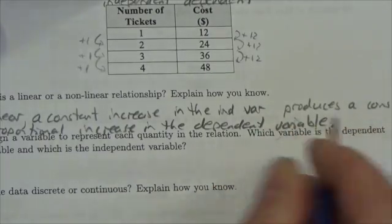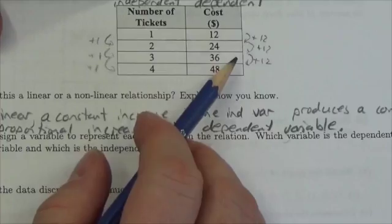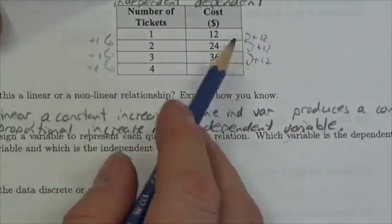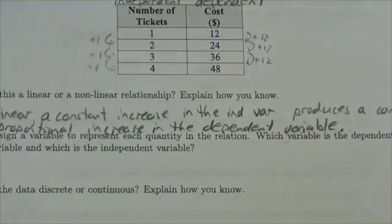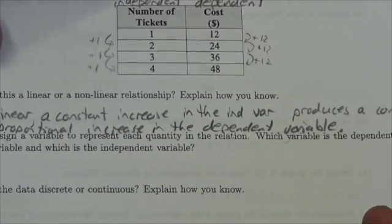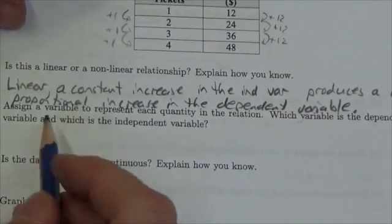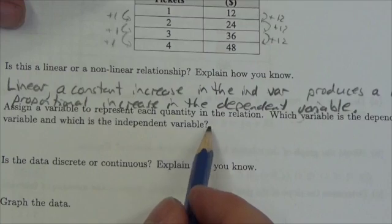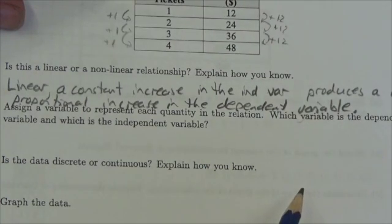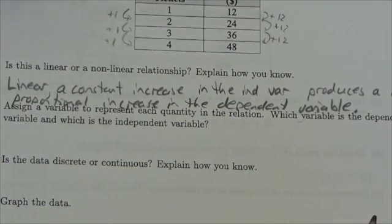So had this started to increase by differing amounts here, so every increase of one produced different amounts here, that would not have classified as linear. Now let's take a look. Assign a variable to represent each quantity in the relation. Which variable is dependent, which is independent? Well, we've already talked about that.